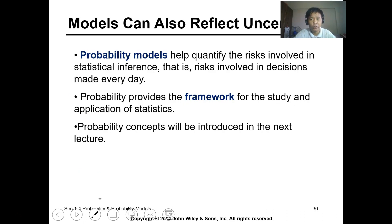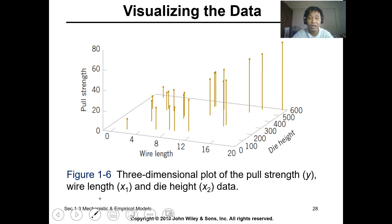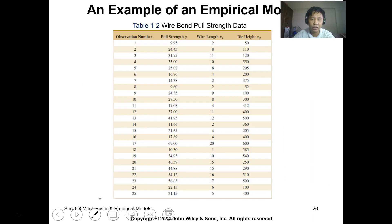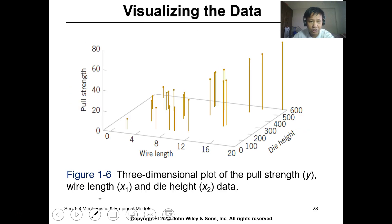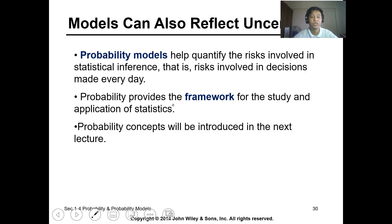Probability models help quantify the risk involved in statistical inference and provide the framework for the study — probability concepts will be introduced in the next lesson. From the empirical model we can identify the pull strength of a material without conducting a new test. For example, given wire length of 8 and die height of 200, you can plot and pinpoint the pull strength value. That is the beauty of the empirical model. That concludes Lesson 1 — thank you.